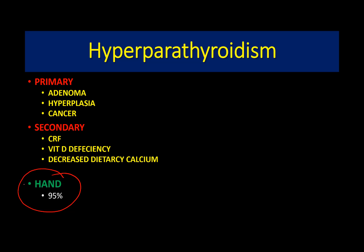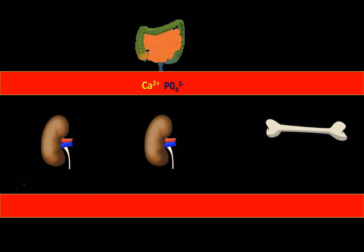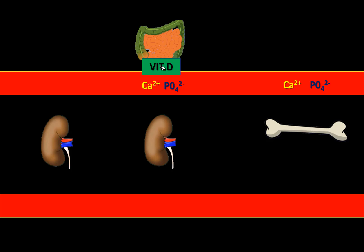The most important manifestations of hyperparathyroidism are predominantly seen in the hand. Normally, calcium and phosphate are absorbed from the intestine with the help of calcitriol (vitamin D). Once absorbed, they enter circulation and supply the bones, helping in bone formation.